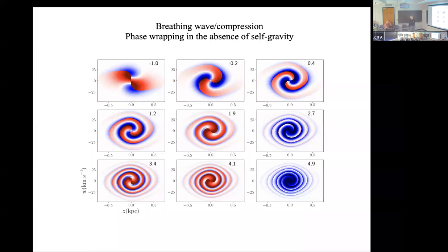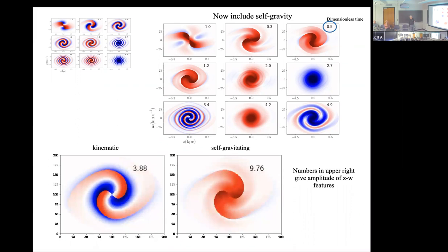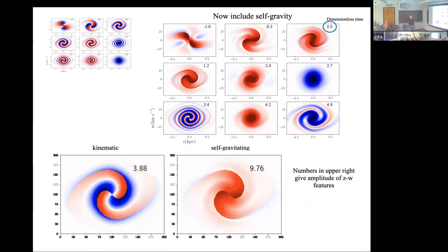For a breathing wave compression, one can impose an initial perturbation to the gravitational field and ask what happens in the absence of self-gravity — it just winds up as expected. When self-gravity is added, the behavior is more episodic: things sort of wind up and then you regenerate new waves and then they wind up again. The movie is perhaps more illustrative — clearly the evolution when you turn on self-gravity, as this wave is swinging by, produces much more complicated behavior in the z-vz phase space.